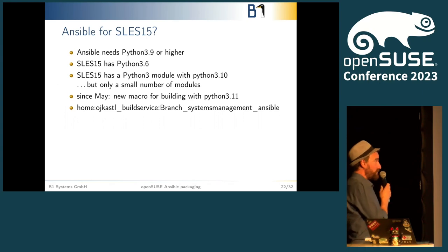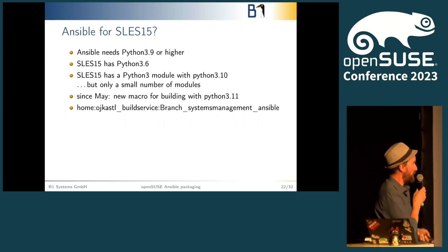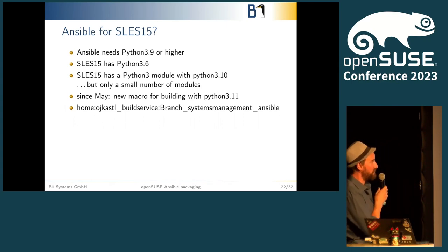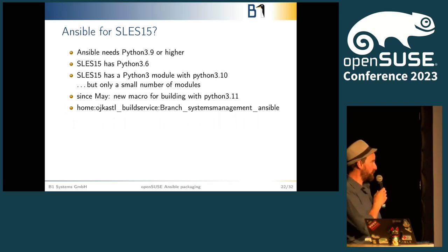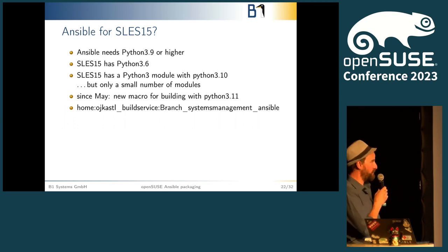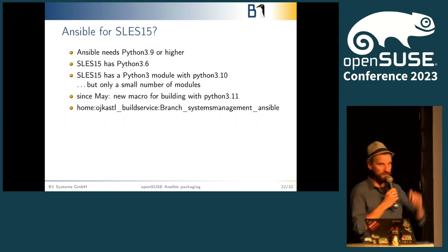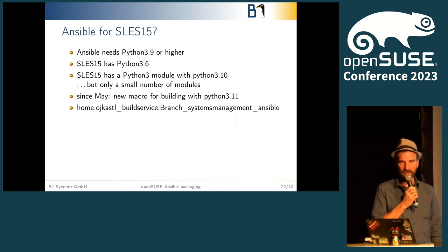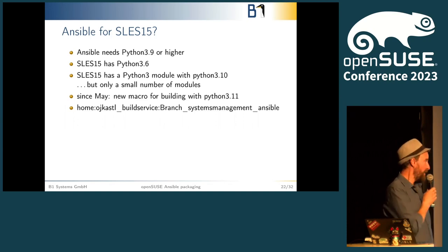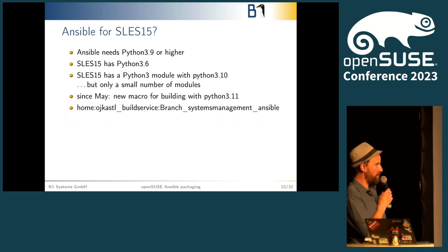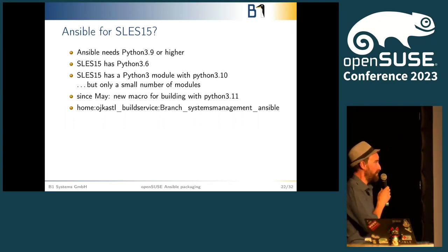For SLS 15 or Leap 15, I had the need to have Ansible there. But SLS has Python 3.6 and Ansible needs 3.9. Fortunately, there's a Python 3 module for SLS which has Python 3.10 with a small number of modules available, so I had to build a large portion of that. Since May, there's a new RPM macro for Python 3.11 — there will be a Python 3.11 stack on SLS 15 SP4 and SP5. I started getting everything in shape. You can find that on the build service — feel free to test it and report back if you encounter any issues.